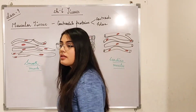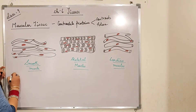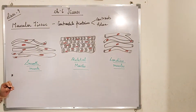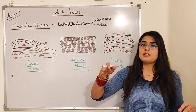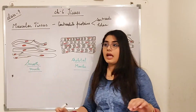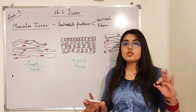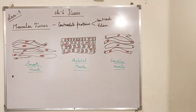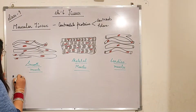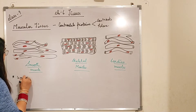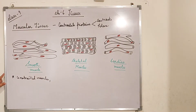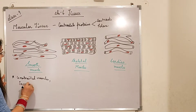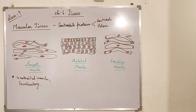Let's come to smooth muscle. In the smooth muscle, you can see that these muscles are smooth — they do not have any striations. In the previous video I mentioned that muscles have light and dark bands, but in the case of smooth muscles those bands are not present. So smooth muscles are unstriated muscles — no striations are present. And are they voluntary or involuntary? They are involuntary, meaning they do not work according to our willpower.